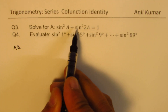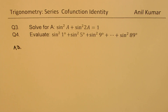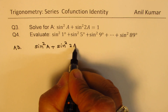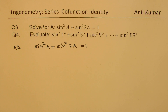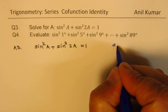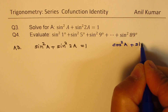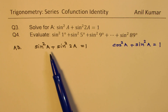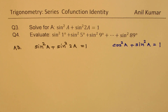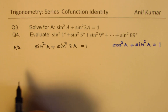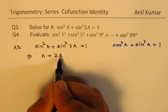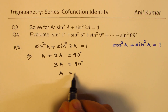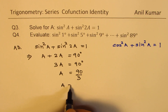Let's answer question number 3 first. When we say sine square a plus sine square 2a is equal to 1, we can relate it to the identity cos square a plus sine square a equals 1. This tells us that in this situation, sine square a plus sine square 2a equals 1 really implies that a plus 2a should equal 90 degrees. That gives us 3a equals 90 degrees, so a equals 30 degrees.